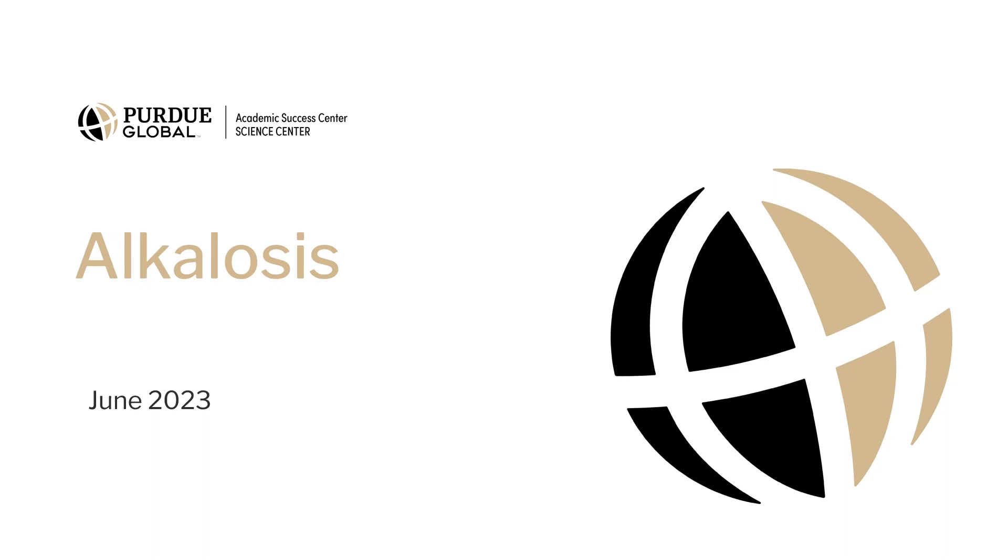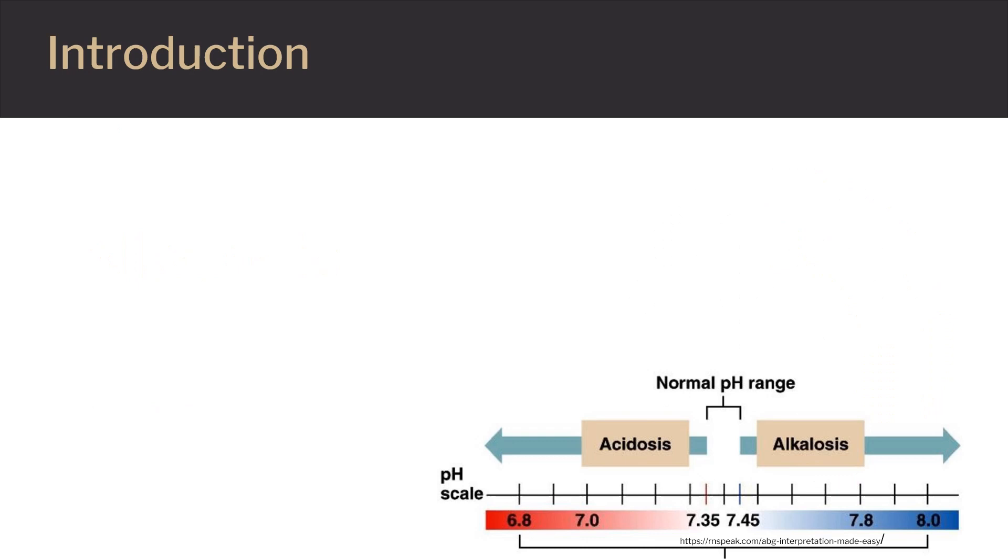Hello, and welcome to our video on alkalosis. Your blood is made up of acids and bases. The amount of acids and bases in your blood can be measured on a pH scale. It's important to maintain the correct balance between acids and bases. Even a slight change can cause major health problems. Normally, your blood should have a slightly higher amount of bases than acids.